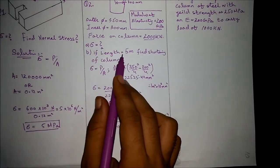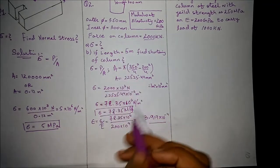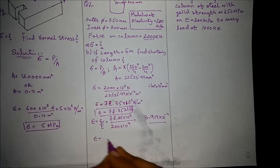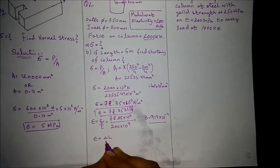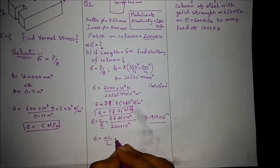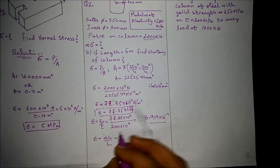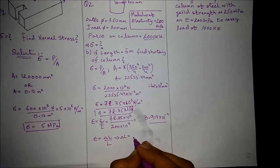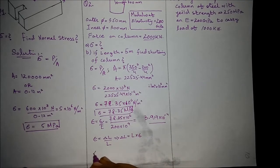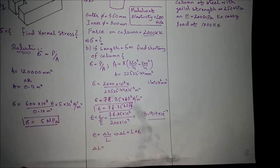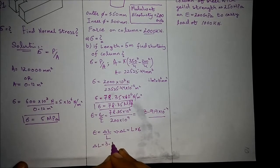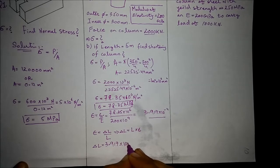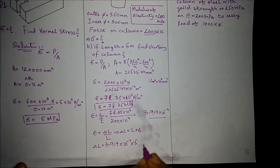The shortening of the column will be with respect to this length. We know that strain equals change in length over the original length. The change in length is to be found out. So change in length equals length times strain. So change in length equals 3.917 times 10^-4 times 5 meters.